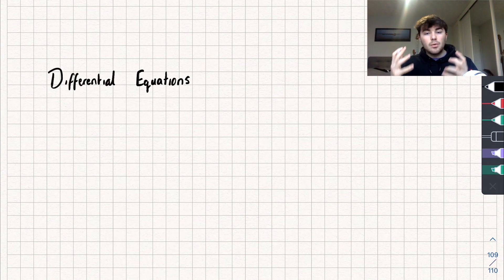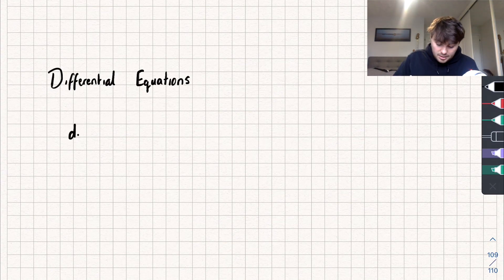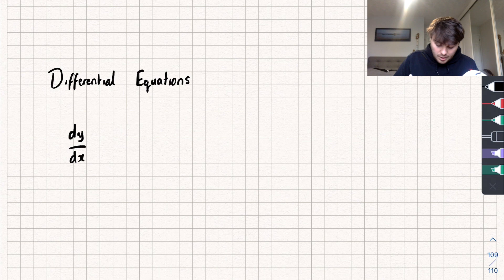A differential equation is an equation that has a derivative term in it, so a dy/dx as well as a mixture of x's and y's. A very simple example of a differential equation might be dy/dx equals 2x. That's a simple differential equation.